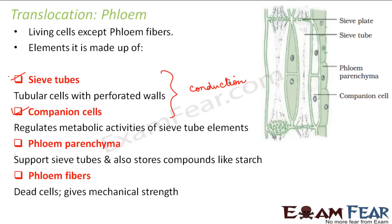In xylem, it was the tracheids and vessels which were actually used for conduction. Similarly, in case of phloem, it is the sieve tubes along with the companion cells which are used for translocation. So what all does phloem conduct?